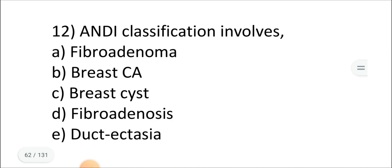Let's look at a multiple choice question on the ANDI classification. The question asks which conditions are included in the ANDI classification. Answer A — fibroadenoma — is true. Answer B — breast carcinoma — is false, because ANDI classification is for benign breast disorders only. Answer C — breast cyst — is true. Answer D — fibroadenoma — is true. Answer E — duct ectasia — is true. If you know the theory, you can answer these questions very easily.